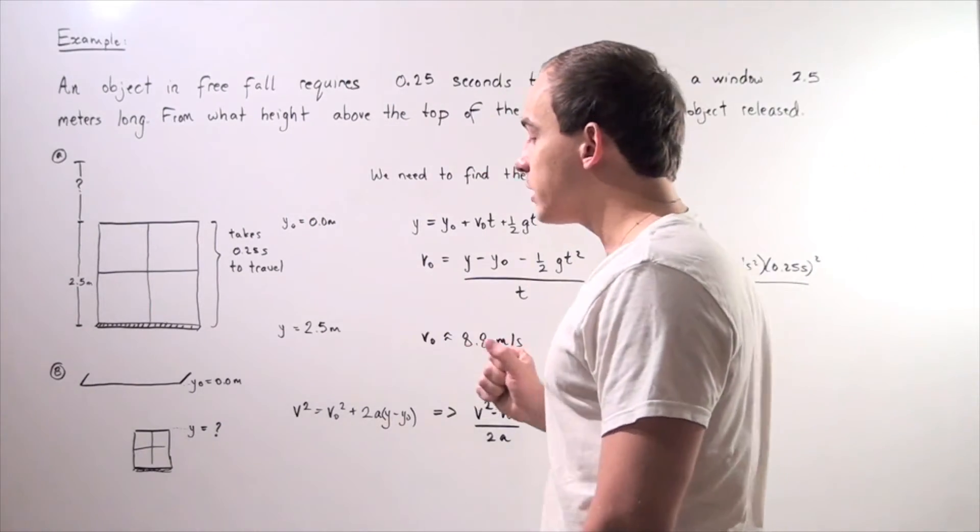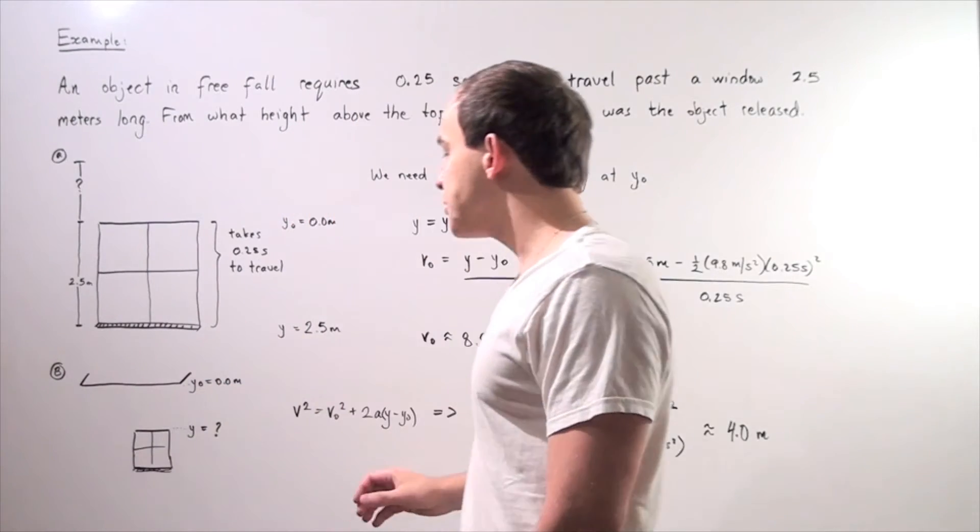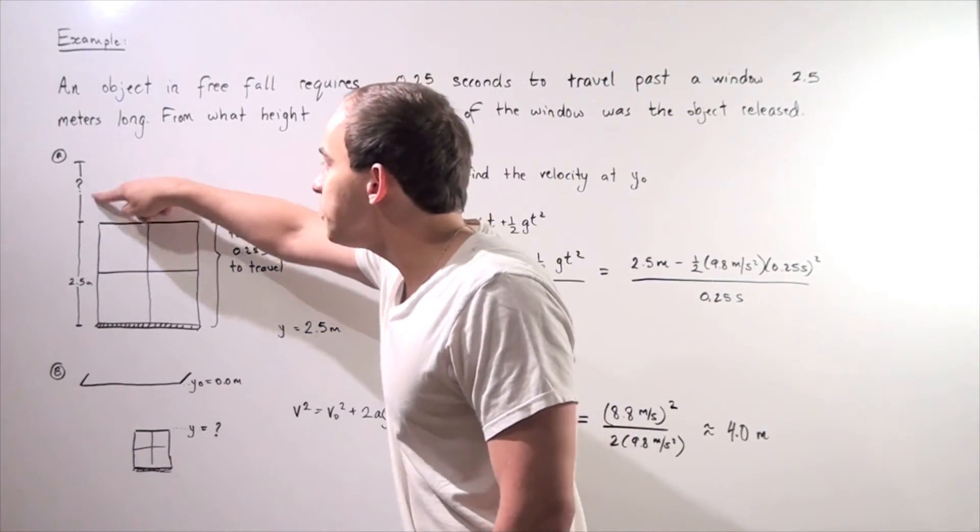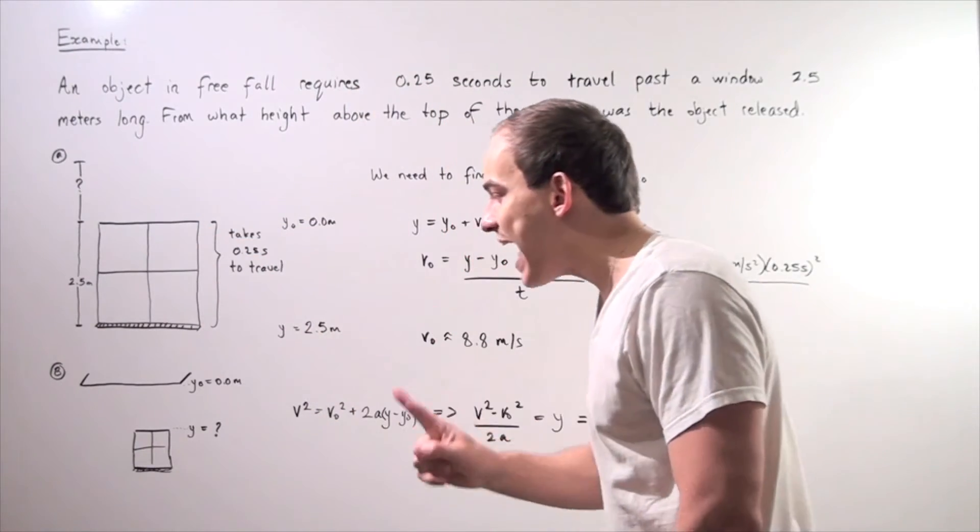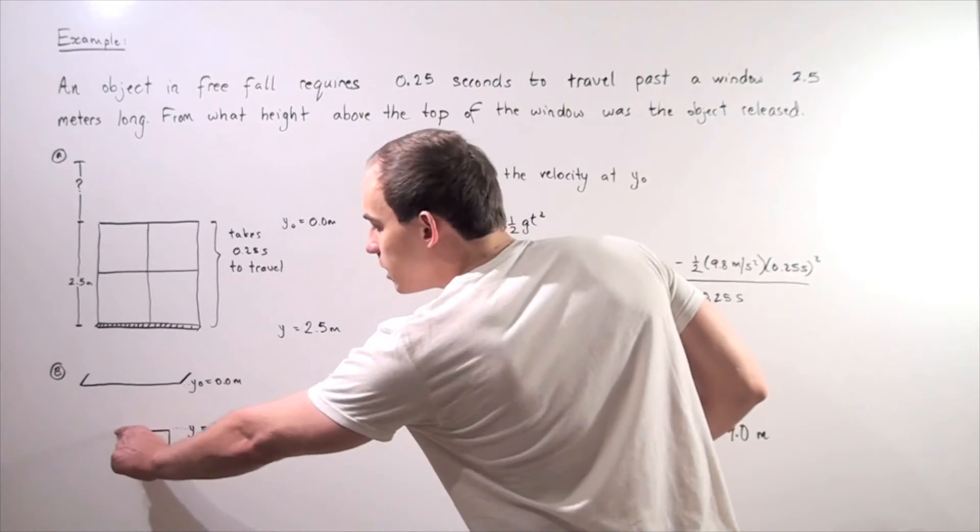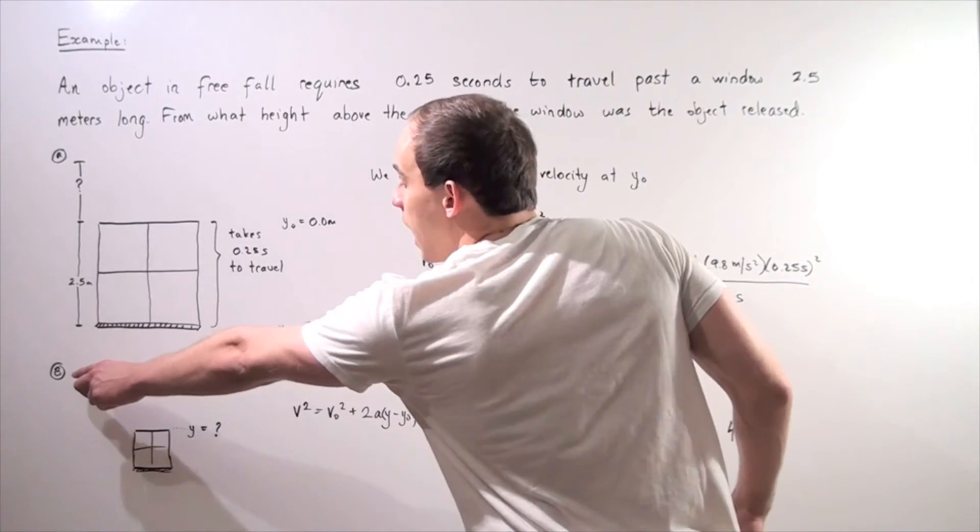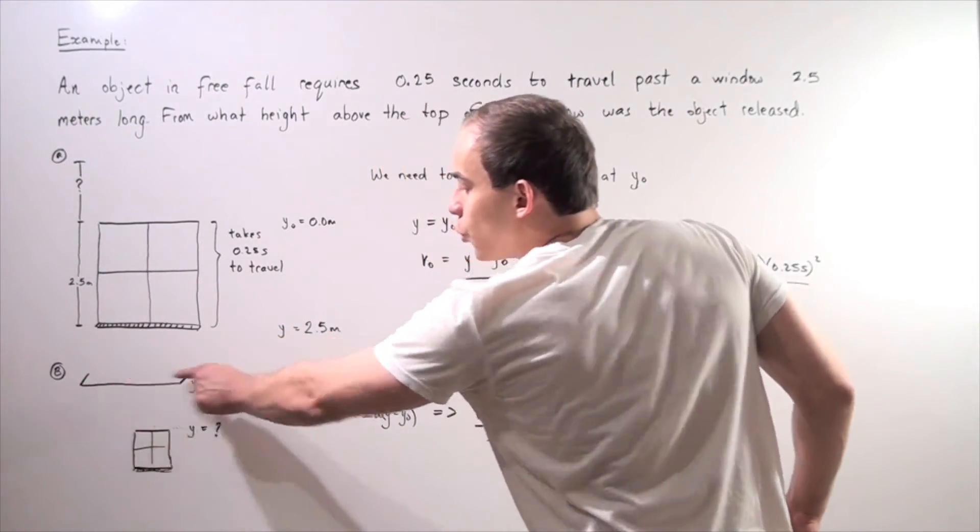Now in the second part, we have a different situation. We want to calculate what this distance is, knowing now what the velocity of the object was at the top of the window. So let's suppose our object was released from the roof.